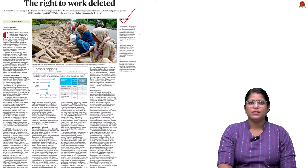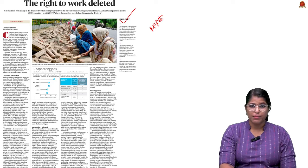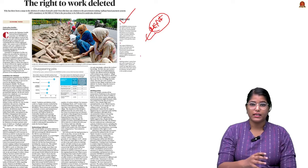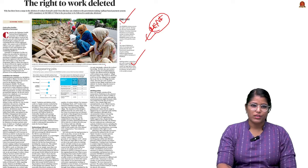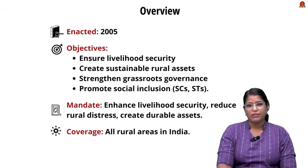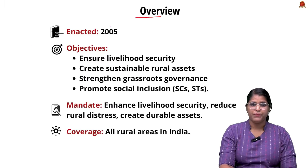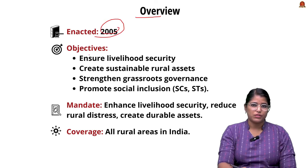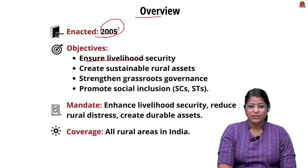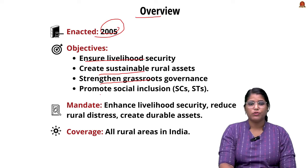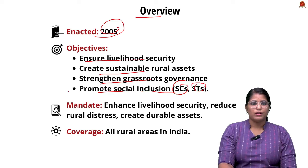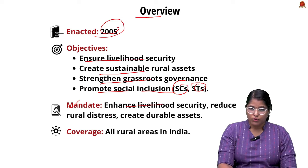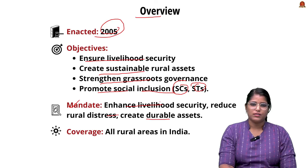This article from the text and context page talks entirely about the MGNREGA scheme, which is currently in news because certain members were arbitrarily deleted from the scheme. The scheme was enacted in 2005. Its objectives are: first, to ensure livelihood security; second, to create sustainable rural assets; third, to strengthen grassroot governance; and fourth, to promote social inclusion especially for Scheduled Caste and Scheduled Tribe people. The mandate is to provide livelihood security, reduce rural distress, and create durable assets.